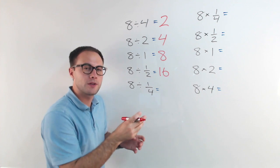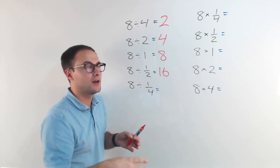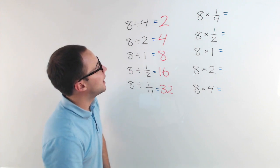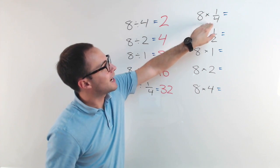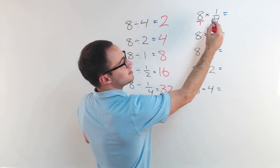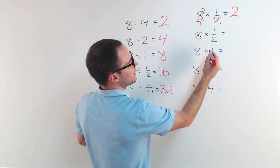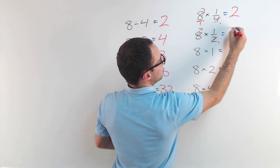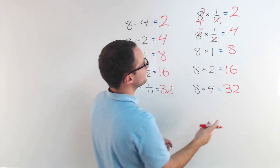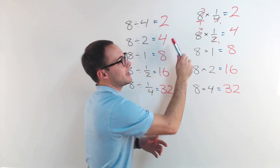Now let's look at the multiplication side. Eight times one-fourth — I can simplify: that becomes one, that becomes two, so it's just two times one which is two. Eight times one-half — that becomes four. Eight times one is just eight. Eight times two is 16. Eight times four is 32. Do you notice something interesting? All the answers are exactly the same.